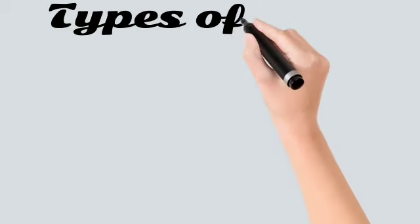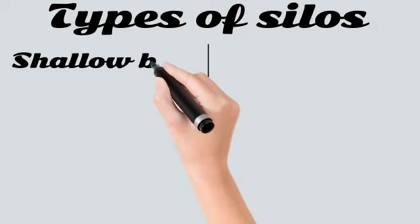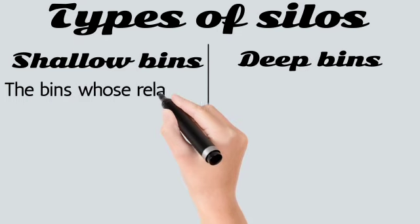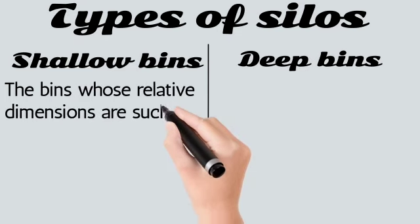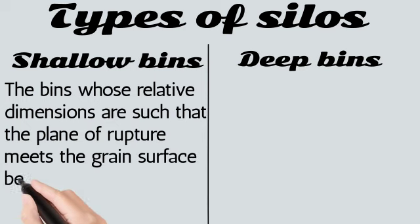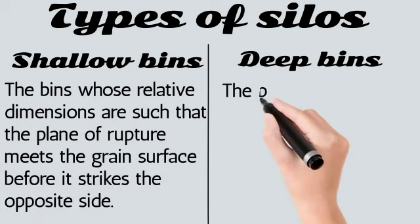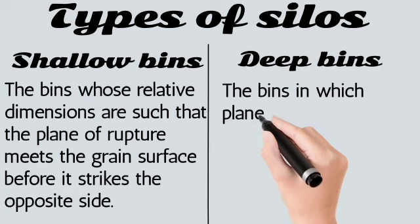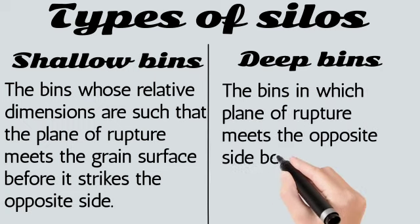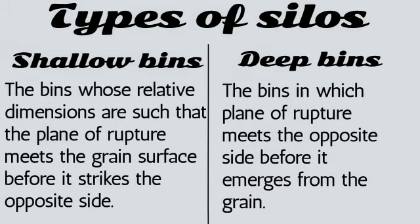Types of silos: Shallow bins and deep bins. Shallow bins are those whose relative dimensions are such that the plane of rupture meets the grain surface before it strikes the opposite side. Deep bins are those in which the plane of rupture meets the opposite side before it emerges from the grain.